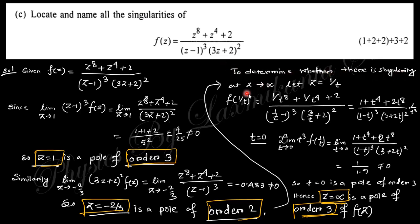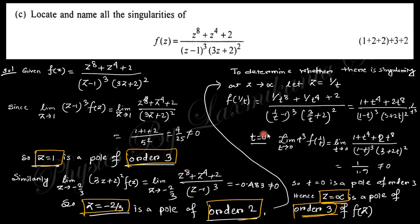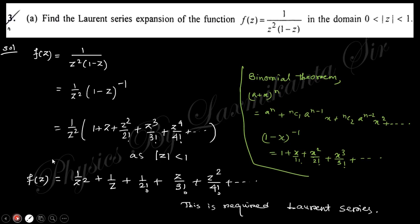To determine whether the singularity at z = ∞ is a pole, substitute z = 1/t. Rearranging gives a 1/t³ term, so t = 0 gives an infinite form. Since t = 0 corresponds to z = ∞, and the limit is not zero, t = 0 is a pole of order three — hence z = ∞ is also a pole of order three. So the three singular points are z = 1 (order 3), z = −2/3 (order 2), and z = ∞ (order 3).